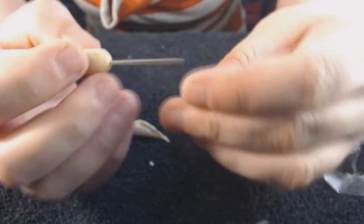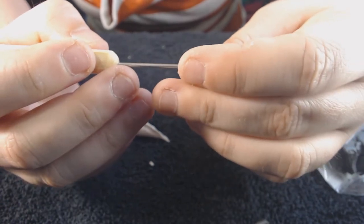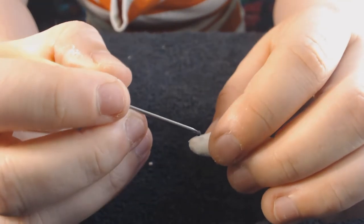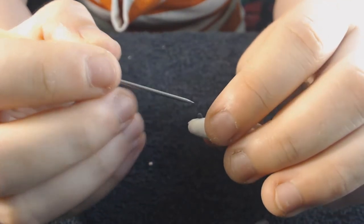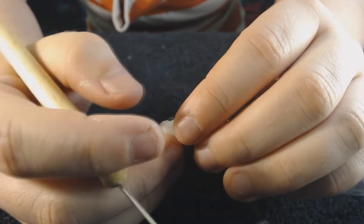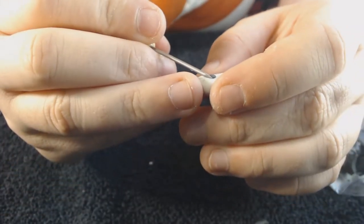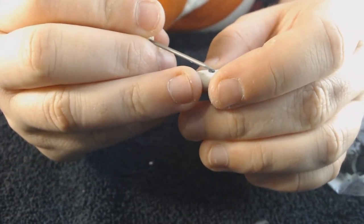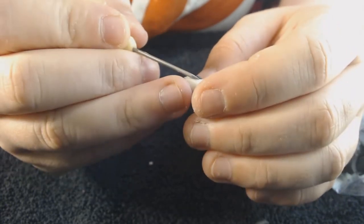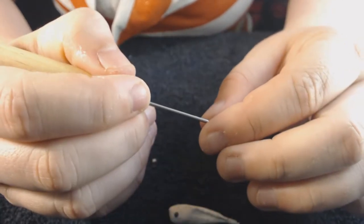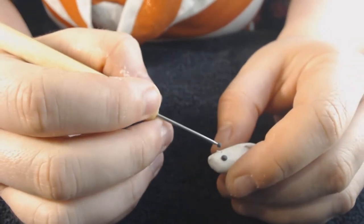Once I smoothed all that out, then I rolled up a little eyeball for the little guy and I stabbed it in. I use my finger to press it down because that's the best way that I found that worked, and then I just shaped it up using this little tool.